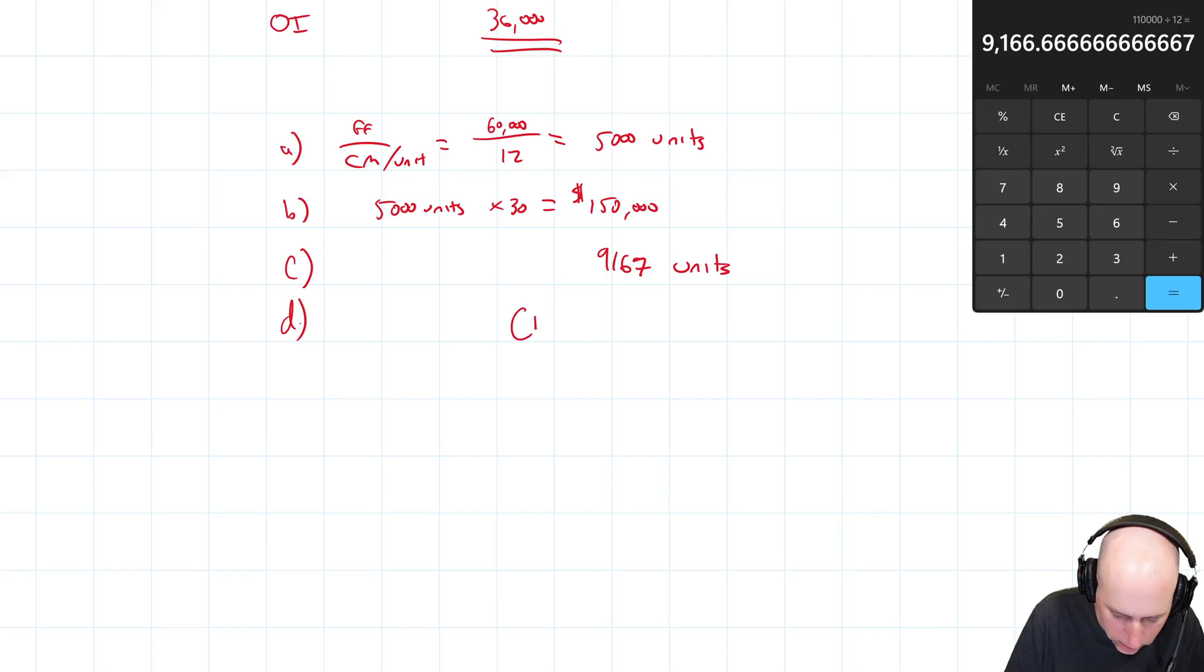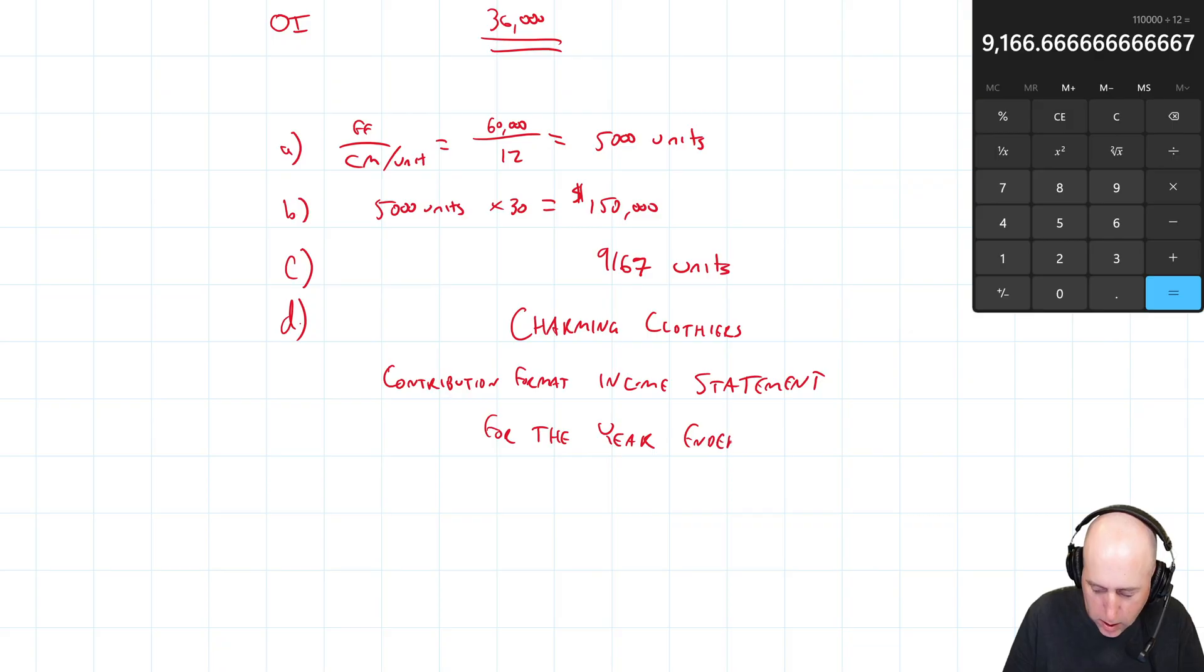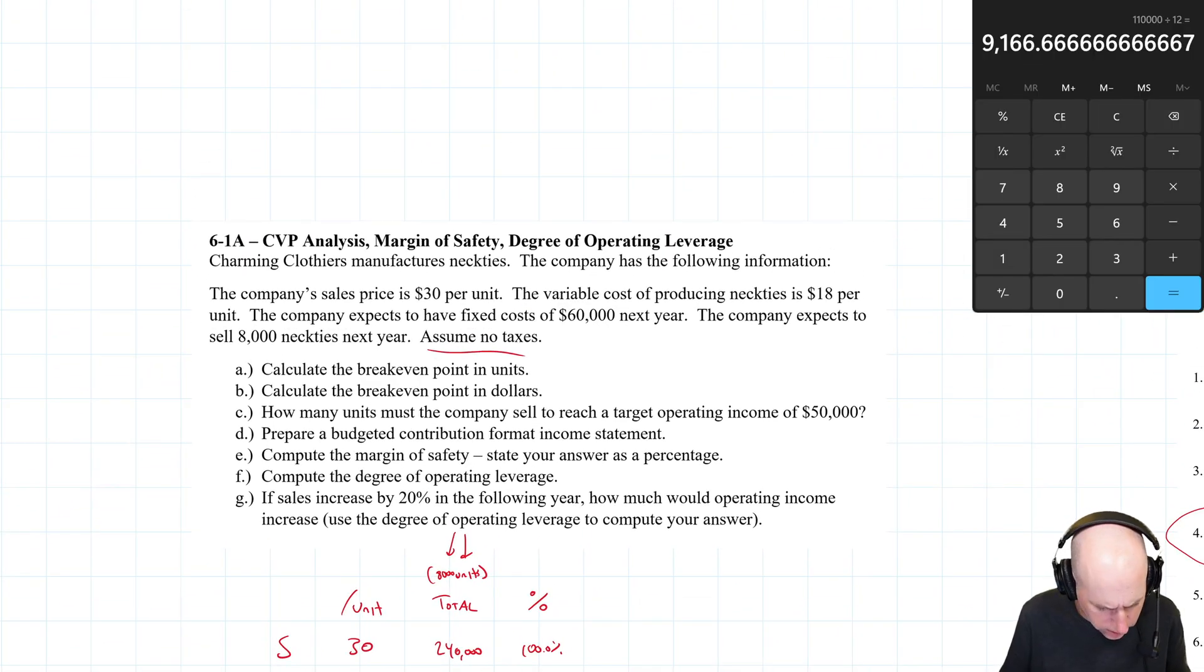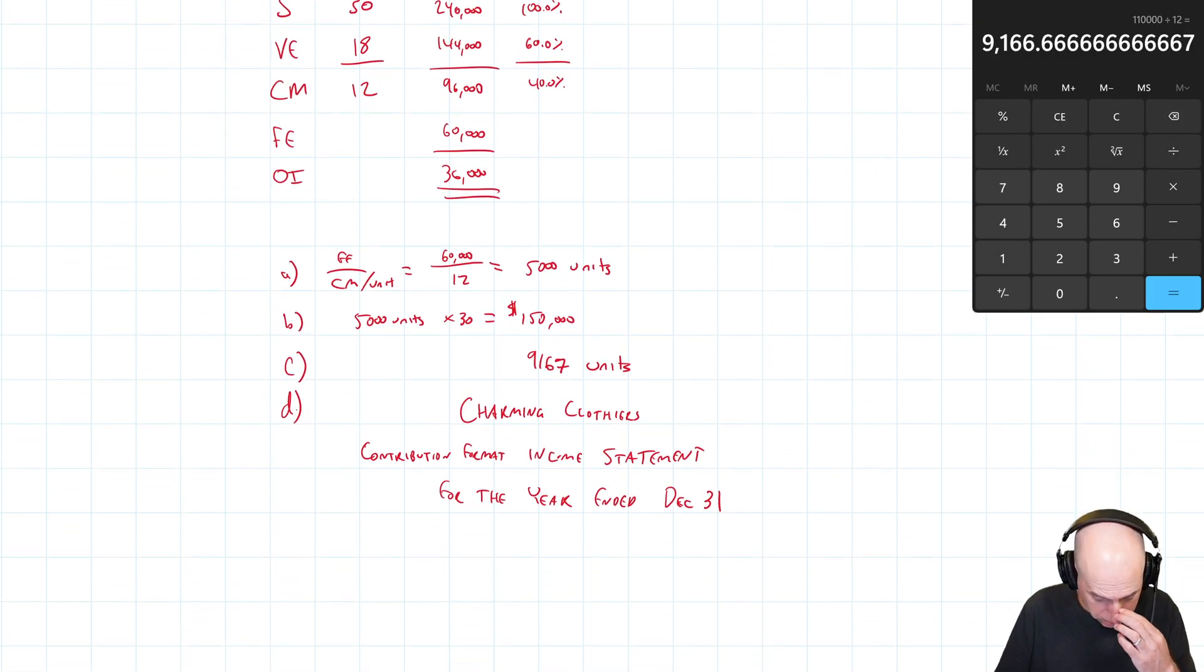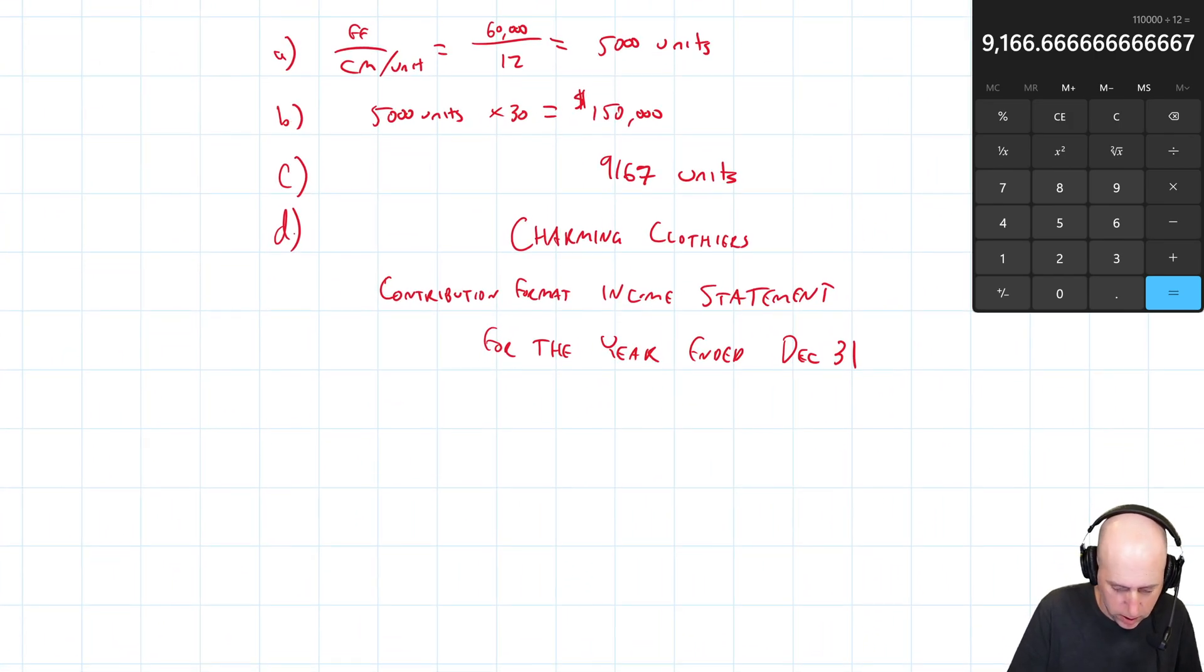So a three line title, we would start with the name of our company, Charming Clothiers. Then we do the name of the statement we're preparing, which is a contribution format income statement or budgeted contribution format income statement. And then the year end and the date. So for the year ended and then the date, we'll just assume it's a calendar year, December 31st.